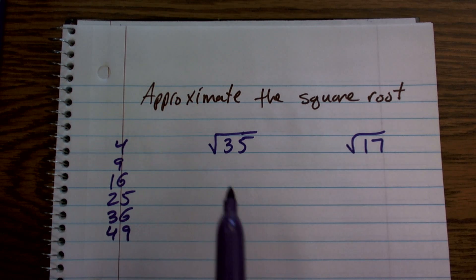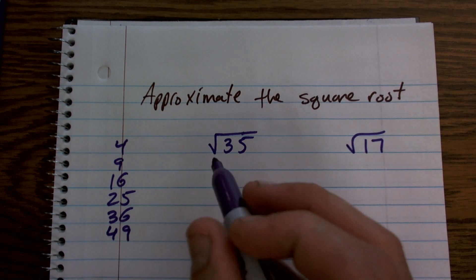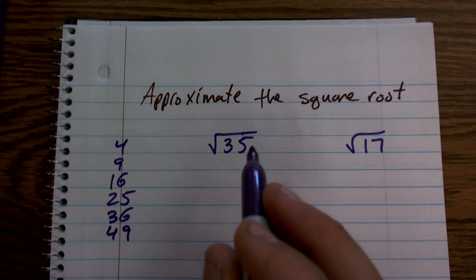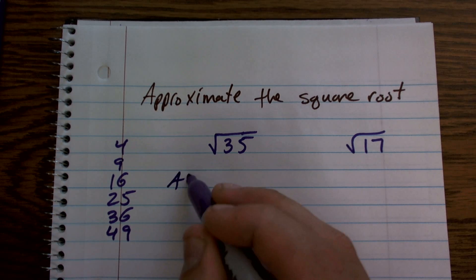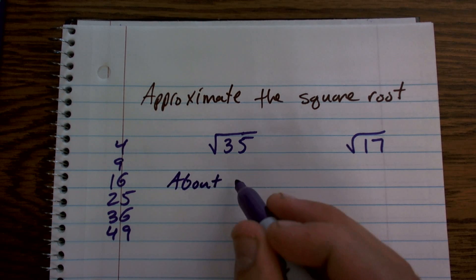This is the square root of 35. So I'm going to say that it's not exactly 6 because we know 6 times 6 equals 36, but I'm going to say about 6.